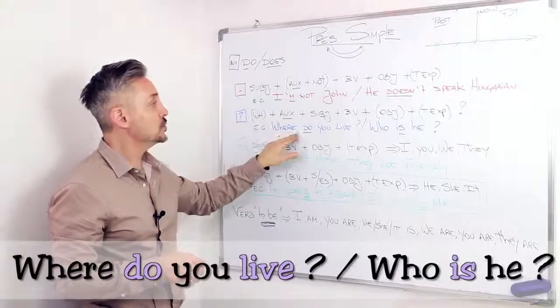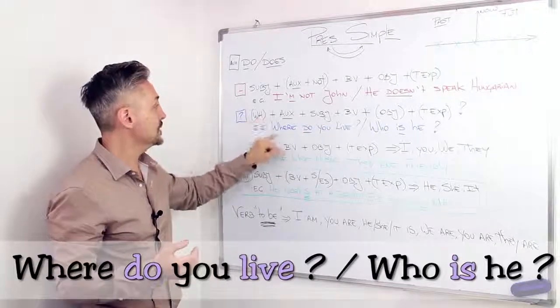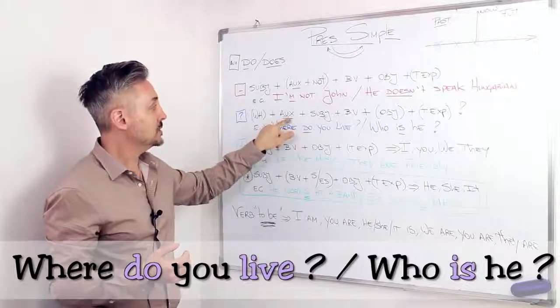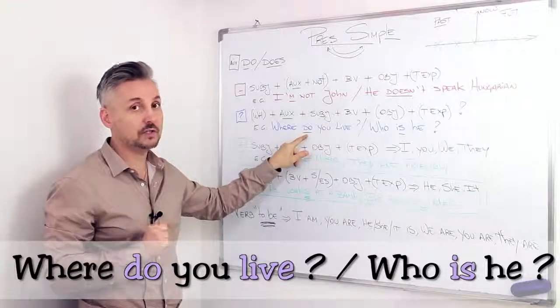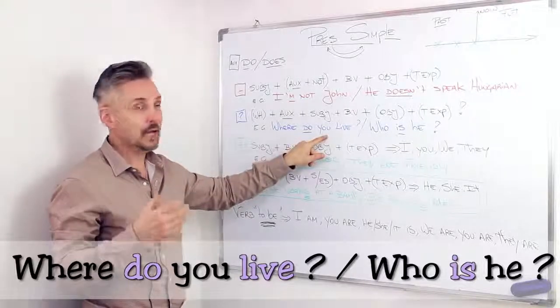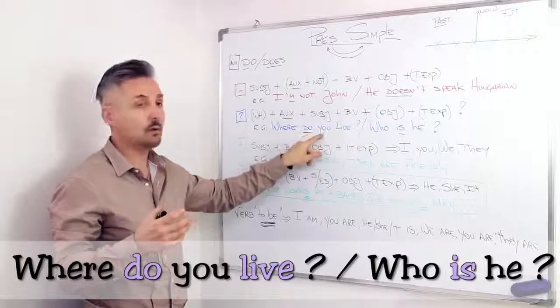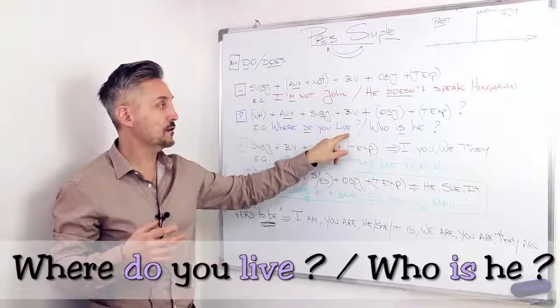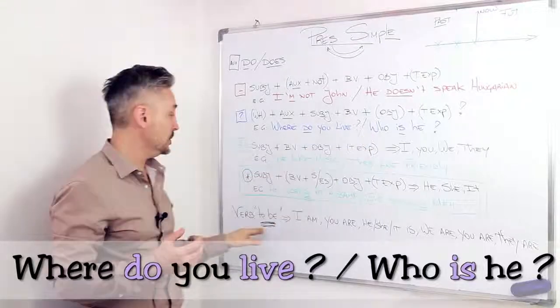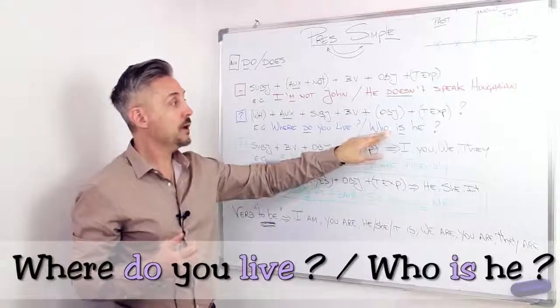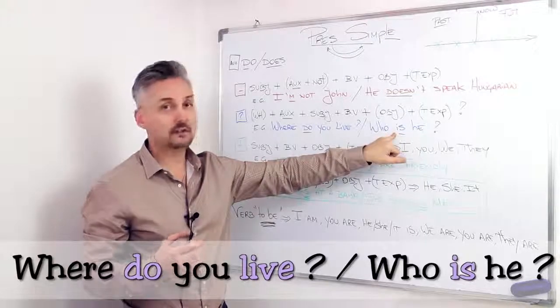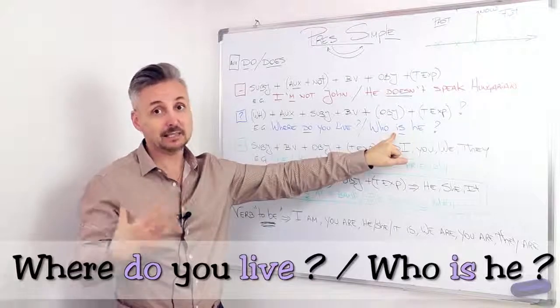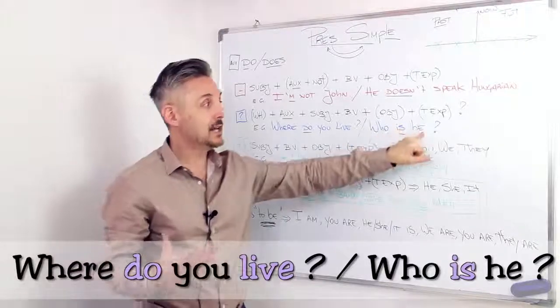I gave you two examples, also showing the verb to be. So where do you live, for example? Where do you live? You can see where is the WH question word, auxiliary, do, because it's not the third person, singular. You would be do, you do, so do you, and then live the base of the verb. Or, if you want to use the verb to be, who is he? So he would be, the verb to be, doesn't need an auxiliary, because it acts as itself as an auxiliary. Who is he?